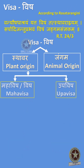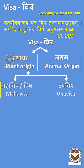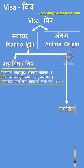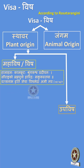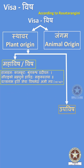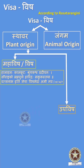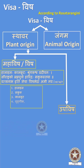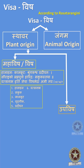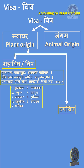Thavara Vishah refers to poisons from plant origin (Vanya Aushadi), while Jangama Vishah are of animal origin. Thavara Vishah is further divided into Mahavishah and Upavishah. The 9 Mahavishahs according to Rasatarangini (Chapter 4 Shloka 7) are: Hala Hala, Saktuka, Kalakuta, Shrungika, Pradipana, Vatsanaba, Bahuputra, Haridraha, and Saurashtraka.